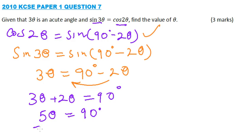We divide both sides by 5. So 5 divided by 5 equals 1, and 90 divided by 5, you get 18. This means theta equals 18 degrees.